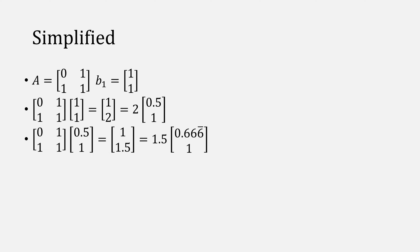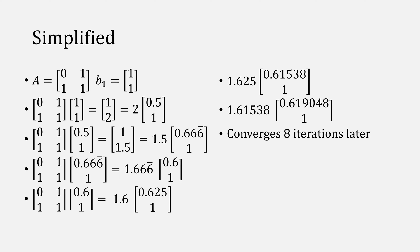Let's look at a more streamlined version of this process. If we take our example matrix and our starting vector, and multiply our matrix times the vector, and then factor out a 2. Then multiply our matrix times our new vector, and factor out a 1.5. We repeat the process, and eventually we converge to this eigenpair of 1.618 as our eigenvalue, and 0.618, 1 as our eigenvector.